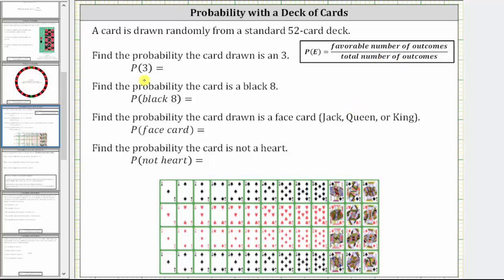We are first asked to find the probability the card is a 3. Looking at the cards below, we have the aces, the twos, and here are the threes. Notice there are four threes in the deck, which means there are four favorable outcomes out of a total of 52 outcomes.